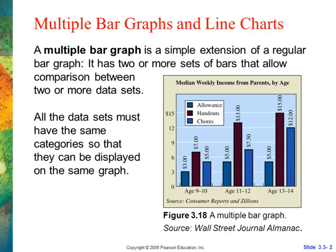All bars must have the same categories. Notice at the bottom we have age 9 and 10, age 11 and 12, and age 13 and 14. Those have to be exactly in the same groups, otherwise you get zeros and they don't show up. The vertical axis is in dollars and is labeled, which is a very good thing.